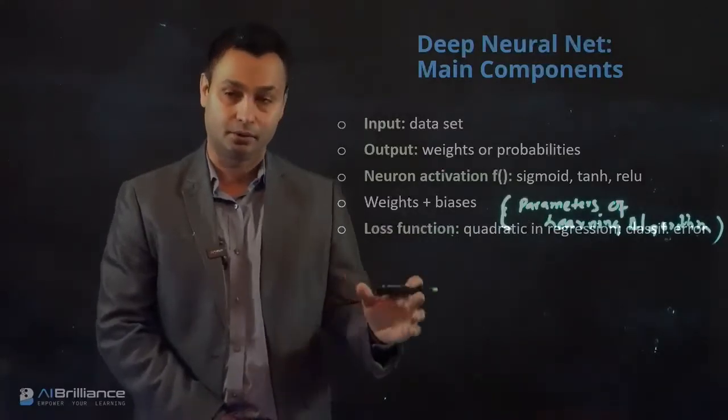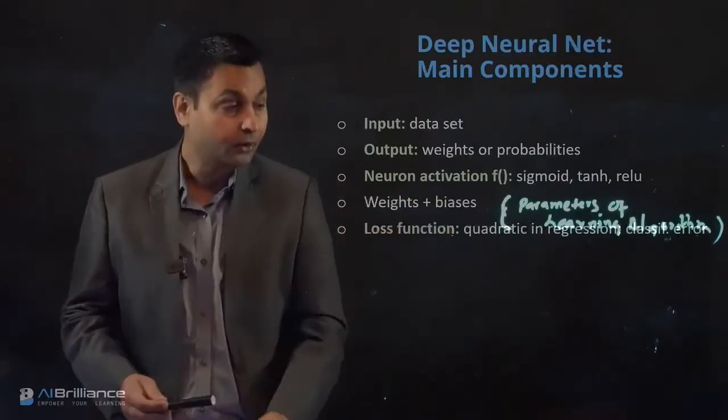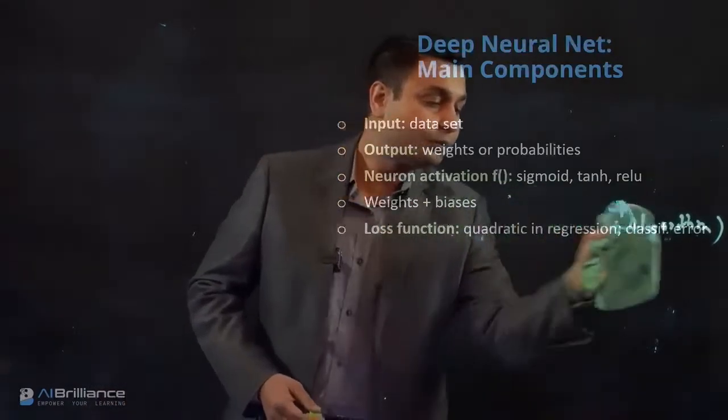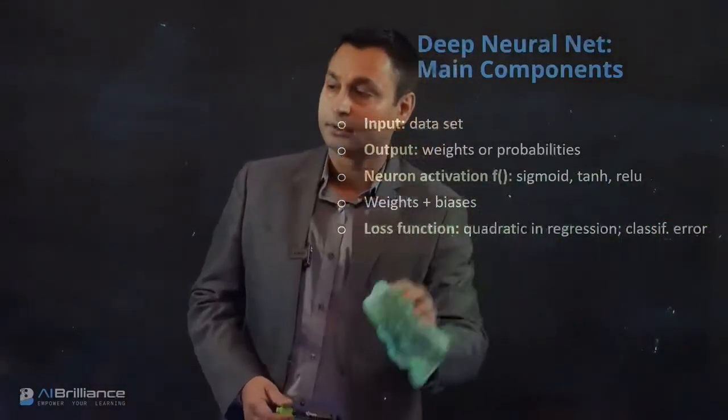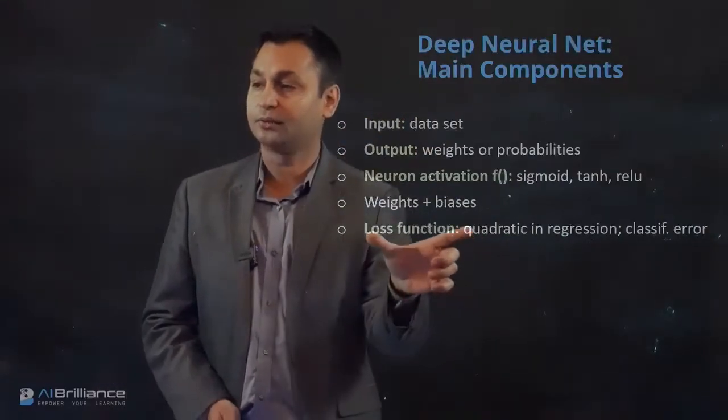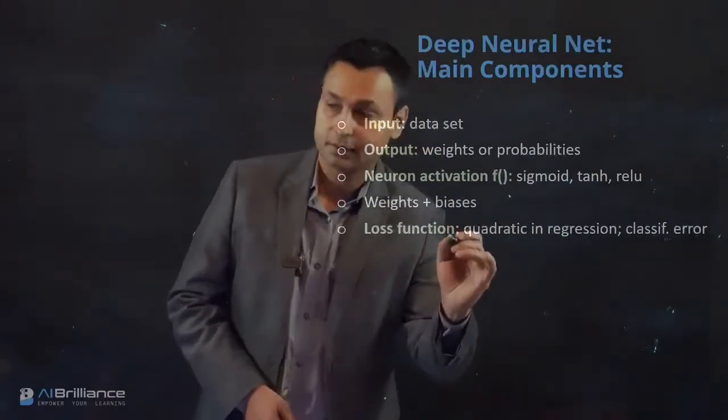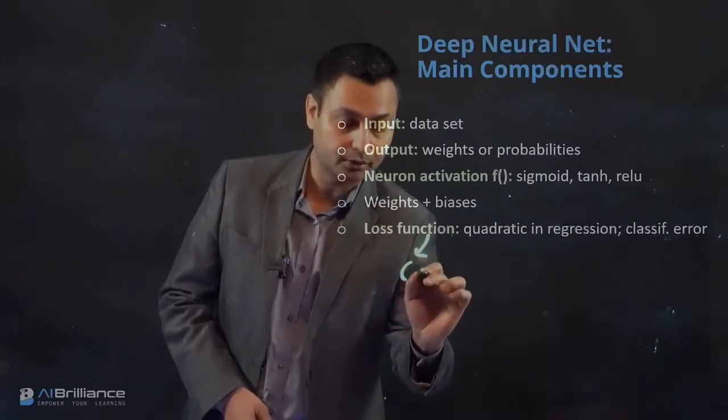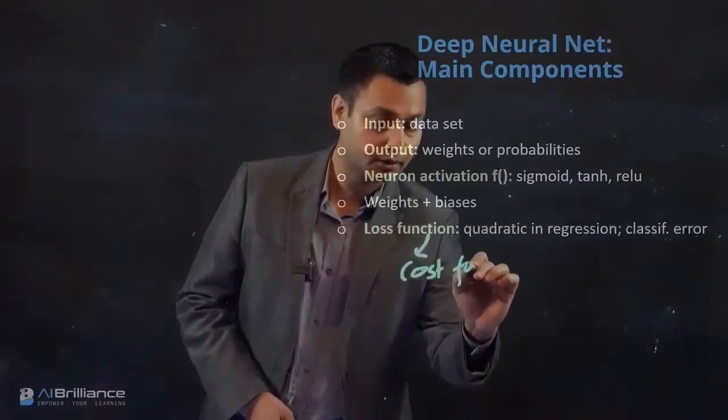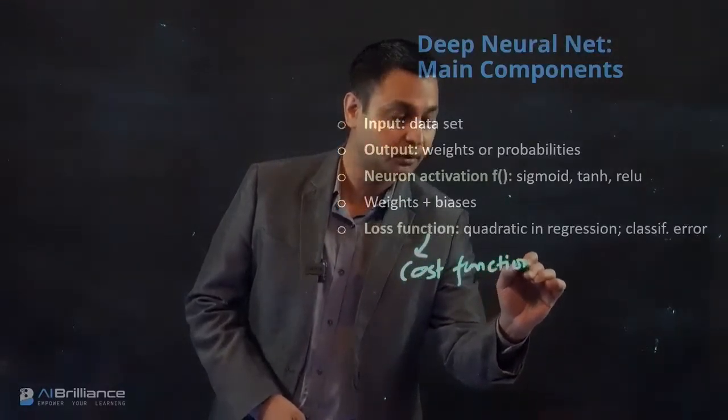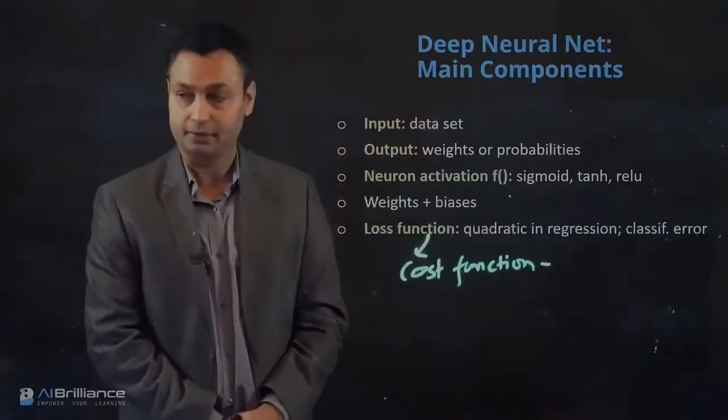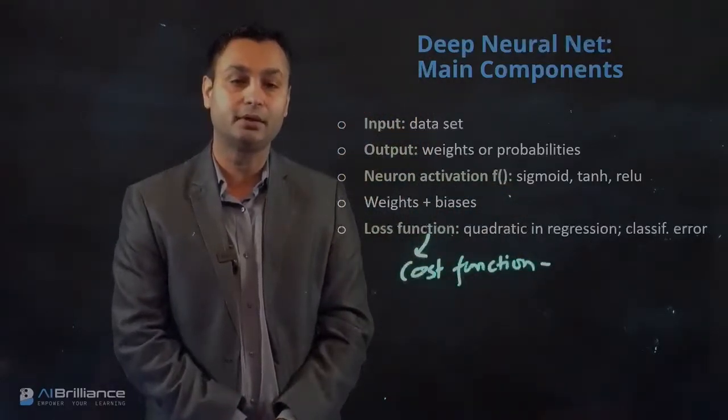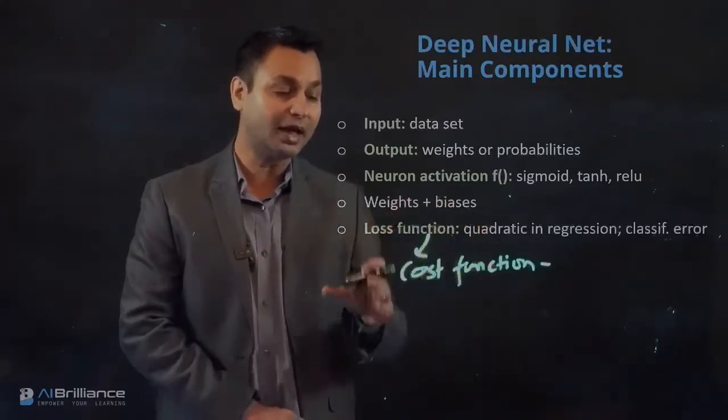In order to enable this learning paradigm, we also have the use of a loss function which helps us compute what is known as the cost function, which is essentially a summation of loss function for the training set. We pass on the training set, compute a loss function, and then average that out to get the cost function.